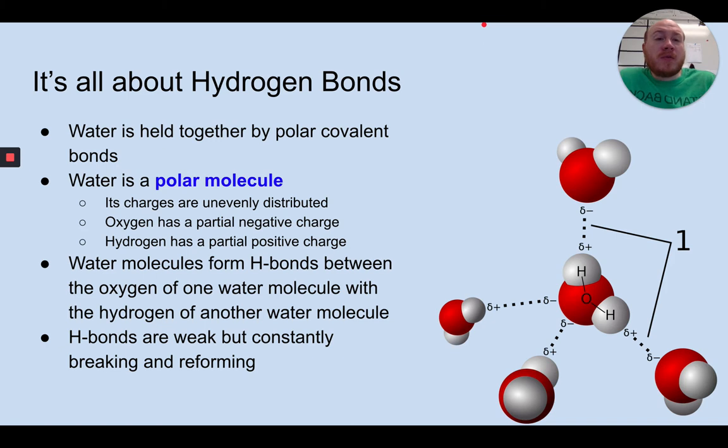Properties of water are all about hydrogen bonds. Water is held together by polar covalent bonds. The actual water molecule, the one oxygen and two hydrogens, are held together by polar covalent bonds. So they share electrons, but they don't share them equally. Water is a polar molecule, which means that its charges are unevenly distributed, where the oxygen is partially negative and the hydrogen is partially positive.